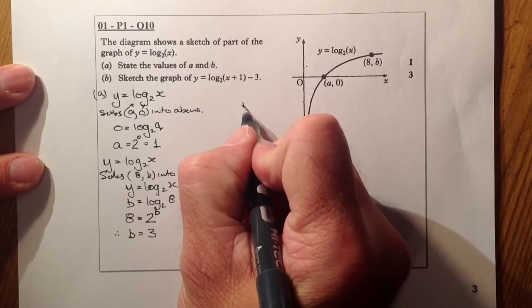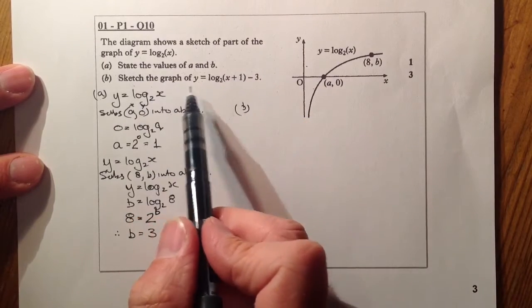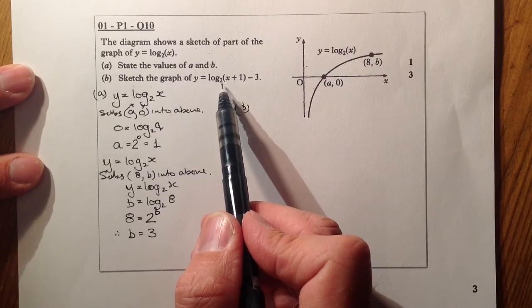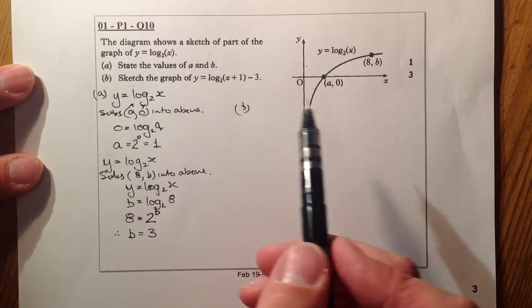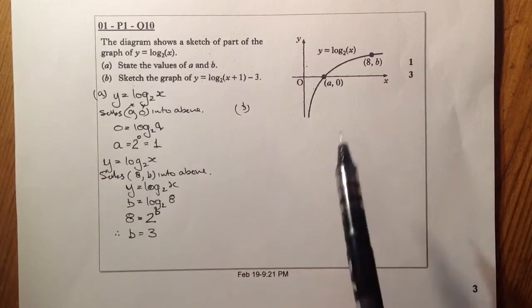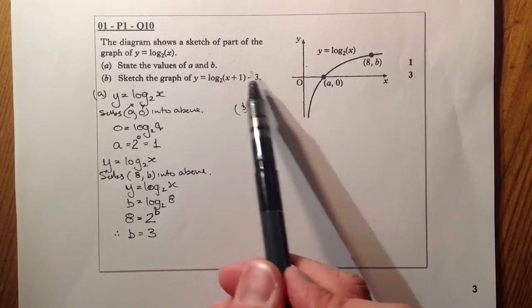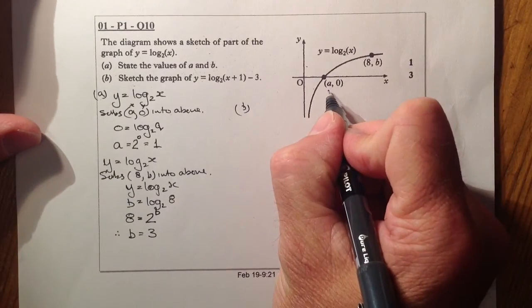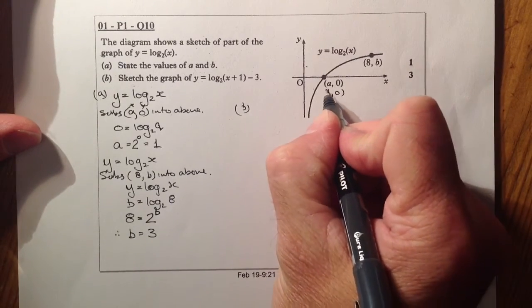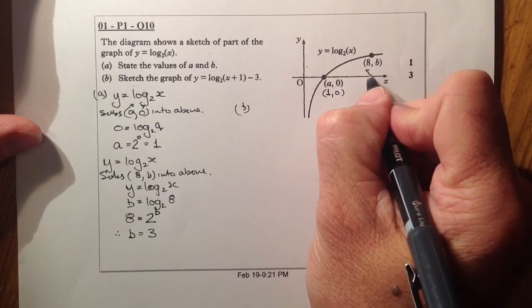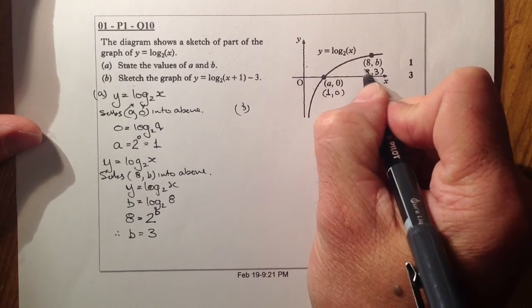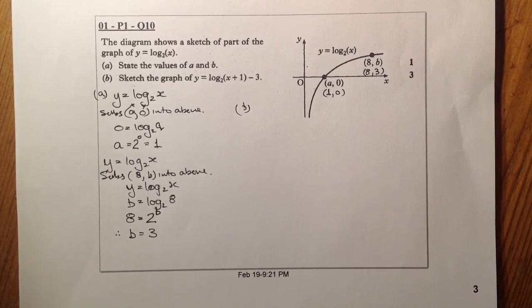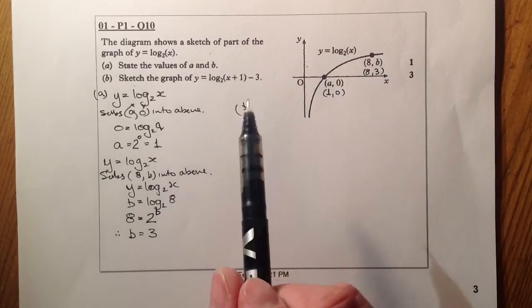For part b, I've got to sketch the graph of y equals log x plus 1 to the base 2 minus 3. What I need to understand here is what happens within this graph. I'm going to write in here that's the point 1, 0, and this here is the point 8, 3 now that I've worked that out.